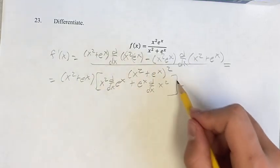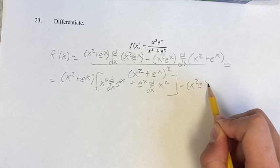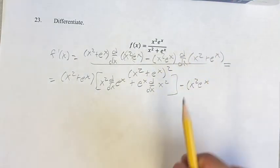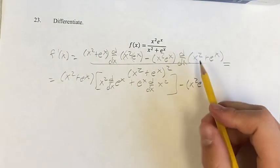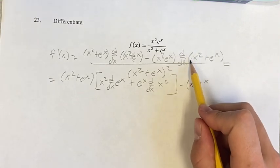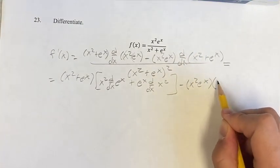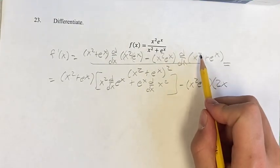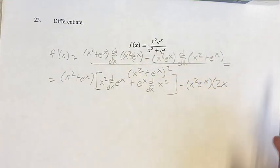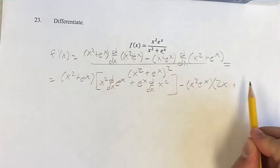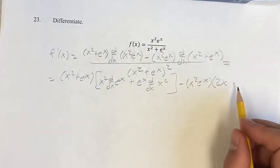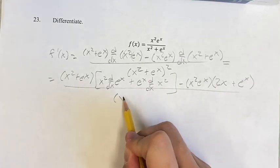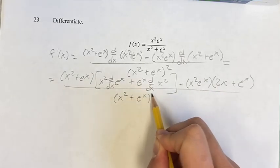This is subtracting x squared e to the x times the derivative of the denominator. The derivative of x squared is a power function, so you bring down the 2 as your coefficient, subtract 1 from your exponent, which gives us x to the first power, which is just x. Then we're adding the derivative of e to the x, which is just e to the x. And this is all over x squared plus e to the x, squared.